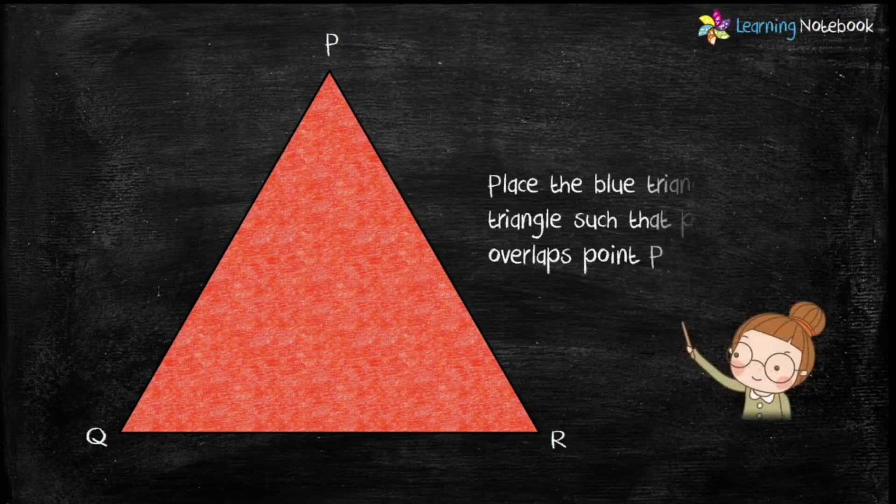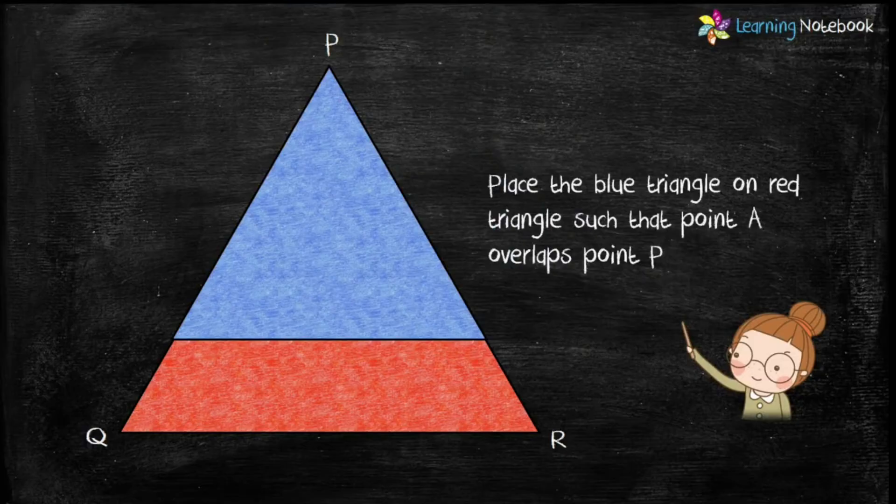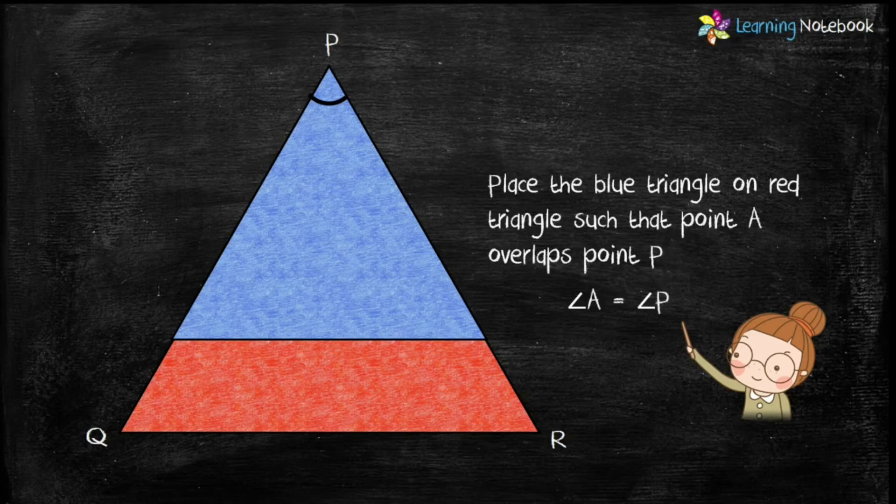Now, place the blue triangle on red triangle such that point A overlaps point P. Students, as we can see, angle A completely overlaps angle P. Therefore, angle A equals to angle P.